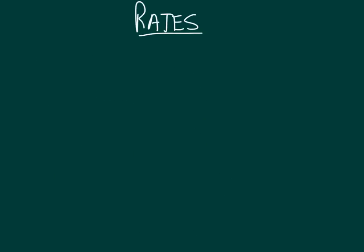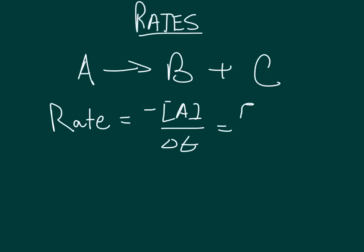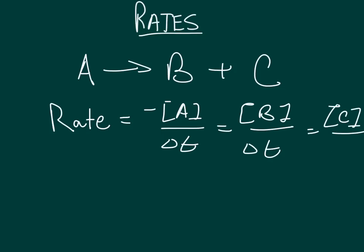Now let's talk about reaction rates. Consider the chemical equation where reagent A decomposes into products B and C. Notice that the ratio of A to B to C is 1 to 1 to 1. Therefore, for every mole of A decomposed, 1 mole of B and 1 mole of C is formed. The rate at which A is decreasing is the same as the rate that B and C are increasing. If there were 2 moles of B being formed for each mole of A decomposing, then the rate of formation of B would be twice the rate of the decomposition of A.